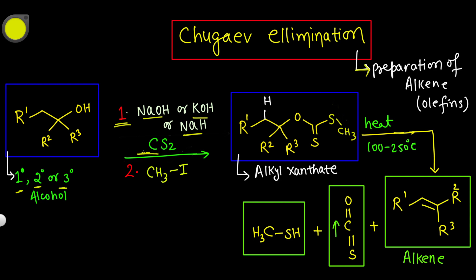Then we have taken carbon disulfide — C double bond S double bond S — meaning sulfur is bonded to carbon from both sides. That is called CS₂, carbon disulfide. In the second step, we have taken methyl iodide, CH₃I. The result is the formation of an alkyl xanthate — this molecule is called alkyl xanthate.